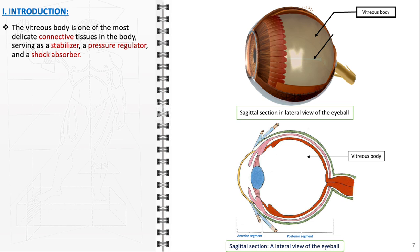By anchoring the retina against the choroid, the vitreous body provides critical stabilization, ensuring the clarity of vision. Additionally, it contributes to maintaining the intraocular pressure, protecting the eye's internal structures from potential damage caused by abrupt movements or impacts by absorbing shocks.